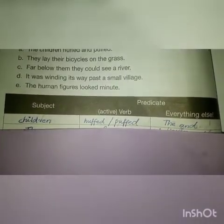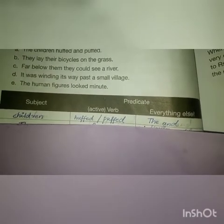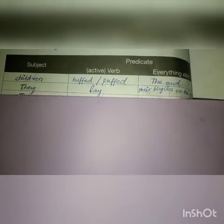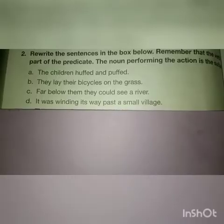First sentence: 'The children huffed and puffed...' — the subject is 'children' and the verb is 'huffed and puffed,' with all other words forming the rest of the predicate. 'They lay their bicycles on the grass' — 'they' is the subject, 'lay' is the verb, and 'their bicycles on the grass' is the rest of the predicate. 'Far below them they could see a river' — 'they' is the subject, 'could see' is the verb, and 'far below them, a river' is the remaining predicate.